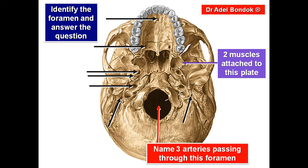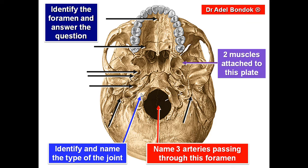This is the lateral pterygoid plate. Two muscles are attached to it: the medial pterygoid and the lateral pterygoid muscles. This is the occipital condyle, which forms the atlanto-occipital joint — a synovial ellipsoid joint.